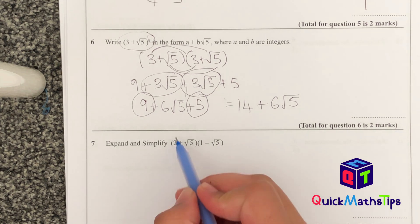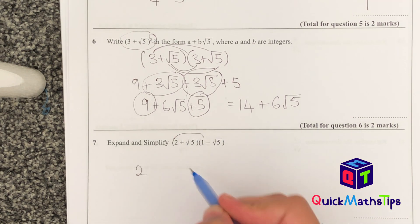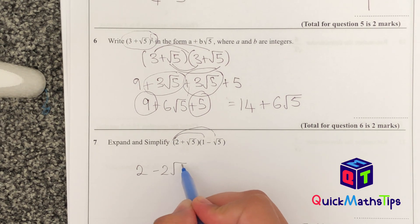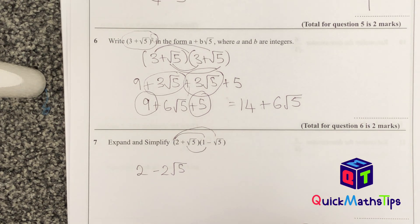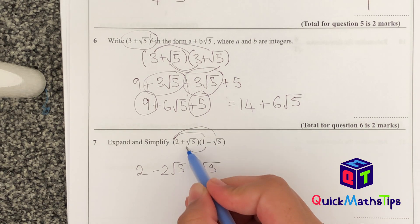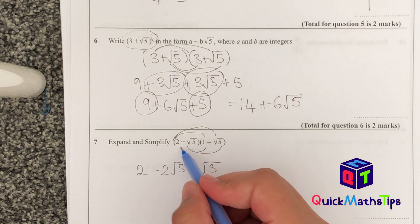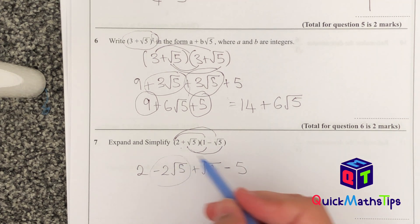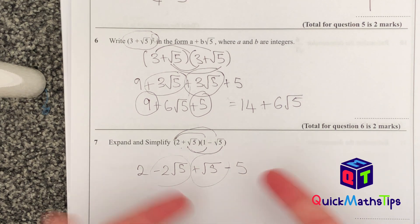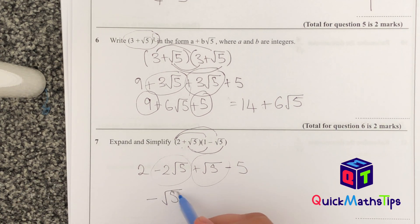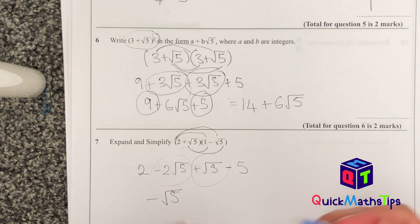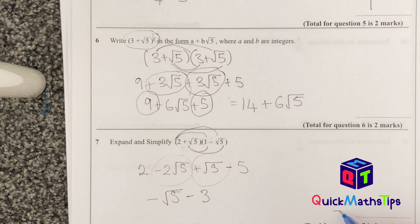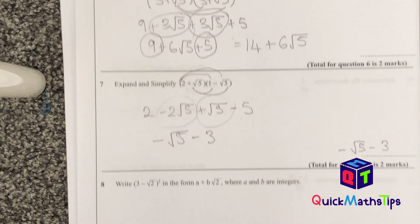Practising another expansion: 2 multiplied by 1 gives 2; 2 multiplied by minus root 5 gives minus 2 root 5; root 5 multiplied by 1 gives plus root 5; plus root 5 multiplied by minus root 5 gives minus 5. Combining: minus 2 root 5 plus root 5 gives minus root 5, and 2 minus 5 gives negative 3. Answer: negative 3 minus root 5.